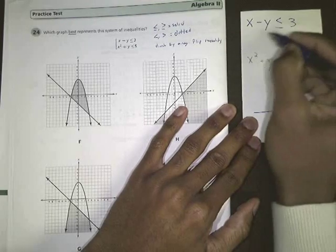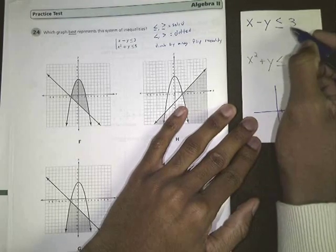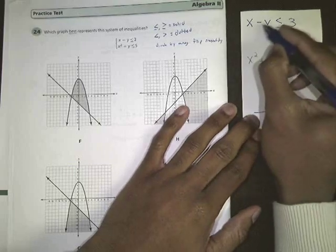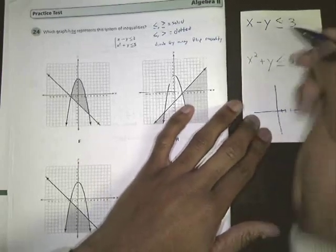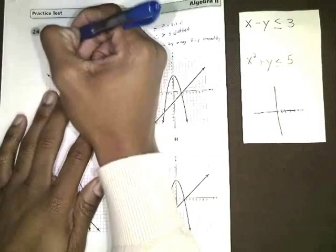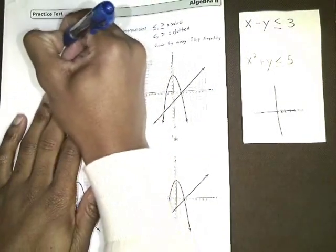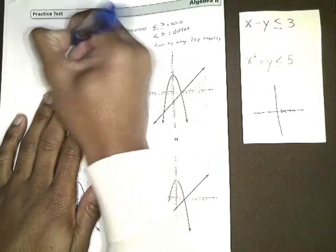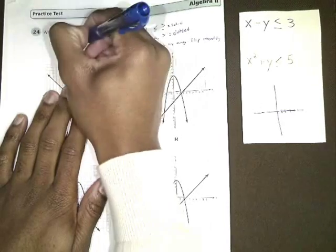With this first equation, x minus y is less than or equal to 3, I'm going to have to get my y or my negative y to be on one side by itself. First, I'm going to have to subtract x. So I'm going to end up with negative y is less than or equal to negative x plus 3.